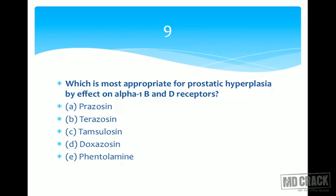Doxazosin is slightly longer-acting than terazosin. That leaves tamsulosin. Tamsulosin is an alpha blocker whose effect is selective in the urinary tract, with less effect on blood vessels. It is therefore the most appropriate and selective drug for prostatic hyperplasia. It acts on alpha-1b and alpha-1d receptors. The answer is tamsulosin.